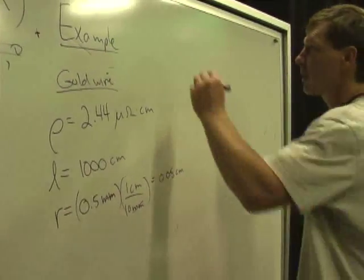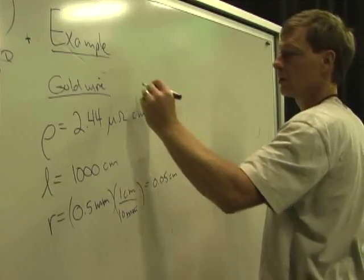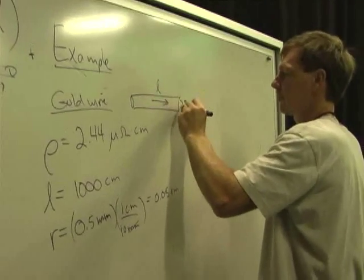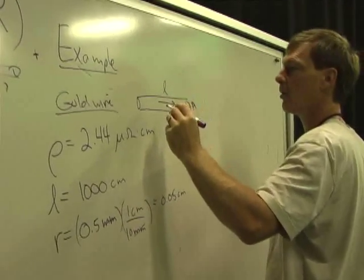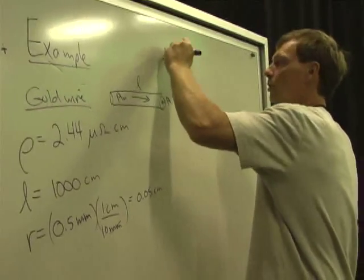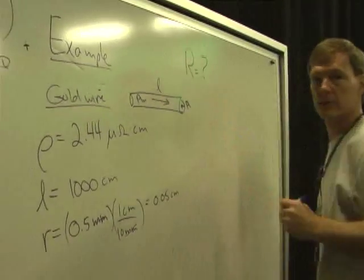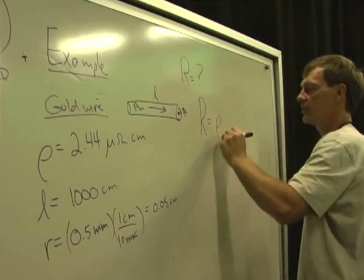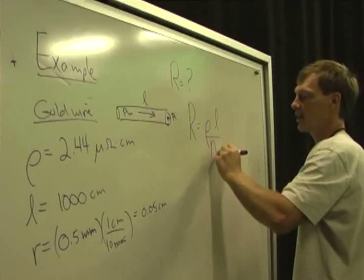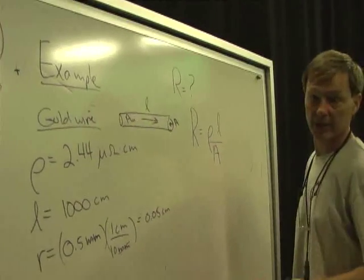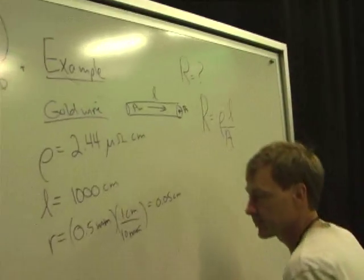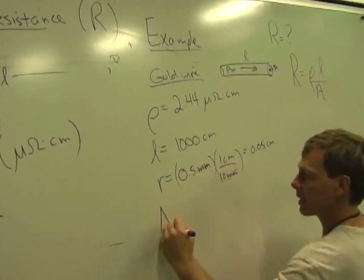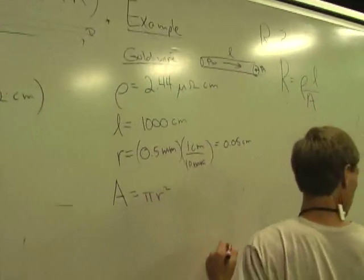Now, I want to know, there's my wire. I want to know, I'll put AU for gold. What's the resistance? Well, the resistance is the resistivity times the length over the area, R = ρℓ/A. And I have everything I need, except I don't have the area. It's a circular pipe, I mean, I don't have the area, excuse me. It's a circular pipe, so the area is pi times the radius squared.